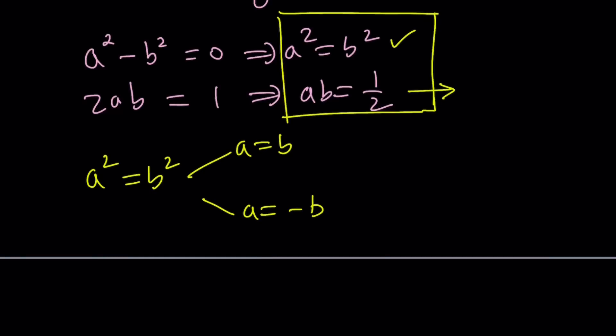Anyways, so the second one fails real quick because ab is positive. Therefore, a and b have to be the same sign unless a or b is 0. This is not going to work. It's not going to work if they're 0. So this is not possible for real numbers. Complex is a different story. So a must equal b.